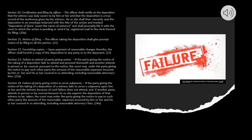Section 24. Failure of Party Giving Notice to Serve Subpoena. If the party giving the notice of the taking of a deposition of a witness fails to serve a subpoena upon him or her and the witness because of such failure does not attend, and if another party attends in person or by counsel because he or she expects the deposition of that witness to be taken, the court may order the party giving the notice to pay to such other party the amount of the reasonable expenses incurred by him or her and his or her counsel in so attending, including reasonable attorney's fees.